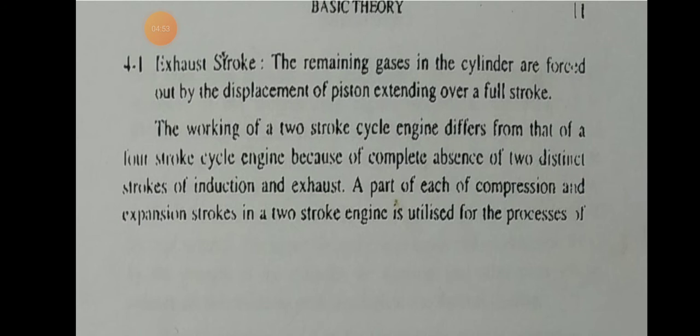The working of a 2-stroke cycle engine differs from that of a 4-stroke engine because of the absence of 2 distinct strokes — mainly induction and exhaust. The rest are the same. The main basic difference between 2-stroke and 4-stroke is the complete absence of induction and exhaust strokes.